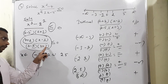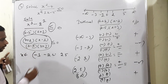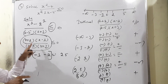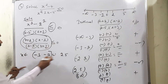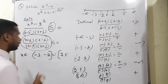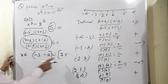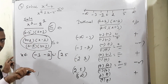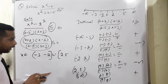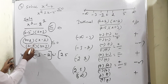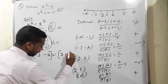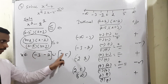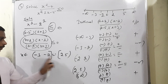At x=2, numerator is zero so value is 0, satisfying ≤0: use closed bracket. At x=5, denominator is zero (not defined), so open bracket. Therefore the final answer is x belongs to (-3,-2] ∪ [2,5).